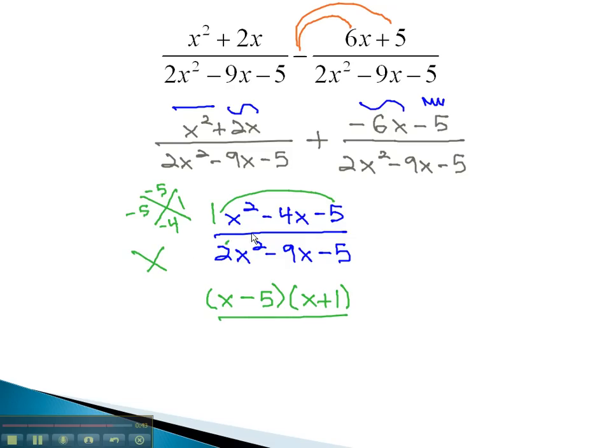In the denominator, we're multiplying to negative 10 and adding to negative 9. This is done with negative 10 and 1. With the 2 in front of x squared, we're careful to factor it to 2x and x. The 2x must be multiplied by negative 5, and the x by positive 1 to give us the negative 10 and 1.